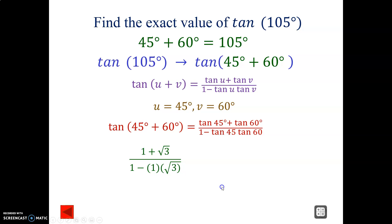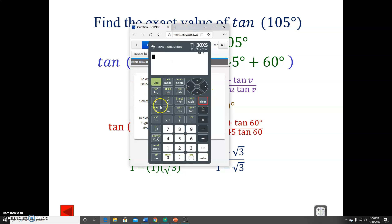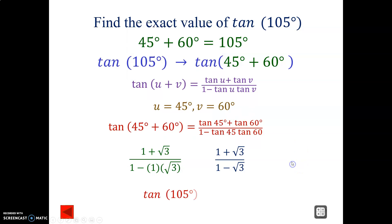So the numerator is one plus radical three and the denominator is one minus radical three. Substituting into the calculator — one plus radical three on the numerator and one minus radical three in the denominator — gives us negative radical three minus two.